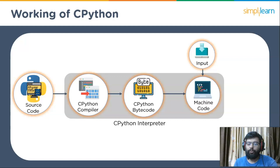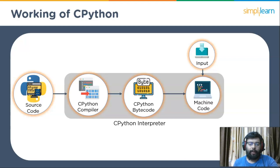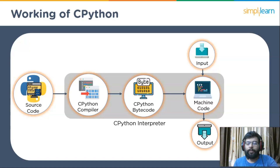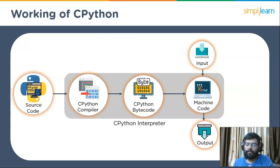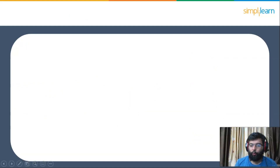The bytecode is sent to the Python Virtual Machine (PVM). The PVM is the part of the Python system that actually runs the Python code in bytecode format. It takes the bytecode instructions one by one and executes them. The bytecode, along with input and library modules, is given as input to the PVM. If any error occurs during execution, it displays a runtime error message; otherwise, it results in the output.